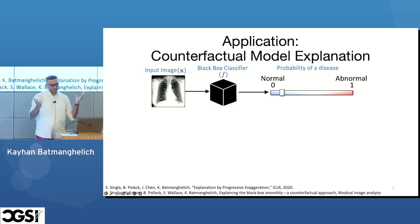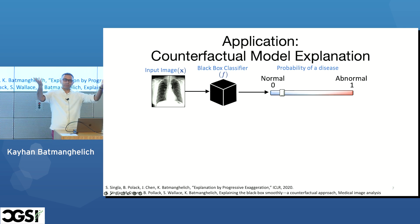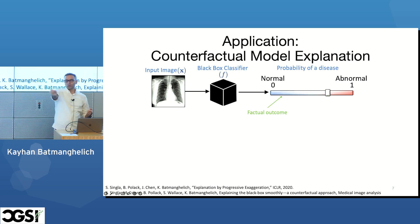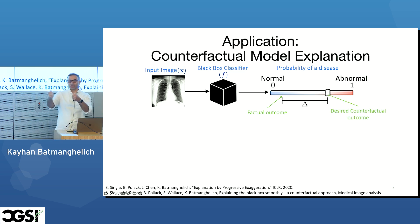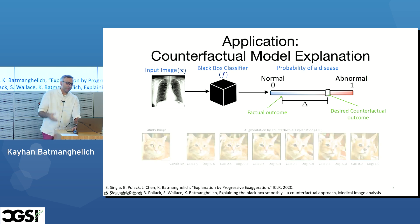One general approach in this field is called counterfactual explanation. To give an example: you have an X-ray of a patient, you put it into a deep learning black box, and it creates some probability of a disease — this is the factual outcome. The idea is to create a kind of knob for the user so they can move it toward the other side, changing the probability and creating synthetic images that reflect that new probability — the counterfactual outcome.